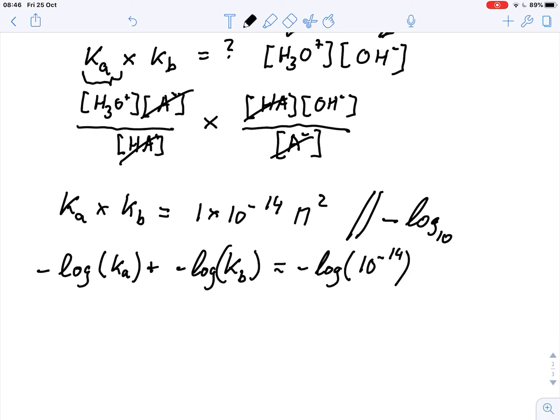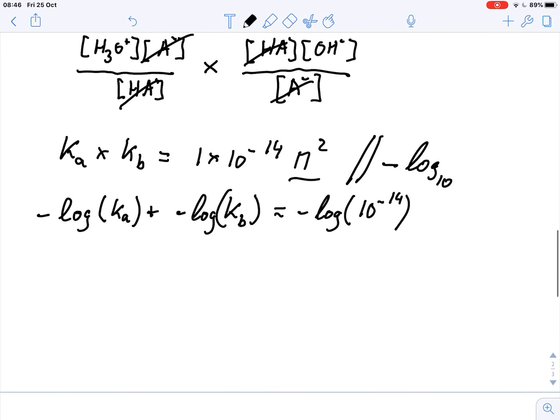And in this case I can't include a unit, but the unit is included here. Now minus log Ka, we know that this can also be written as pKa plus minus log Kb is pKb, equals negative log of 10 to the minus 14, that is 14.